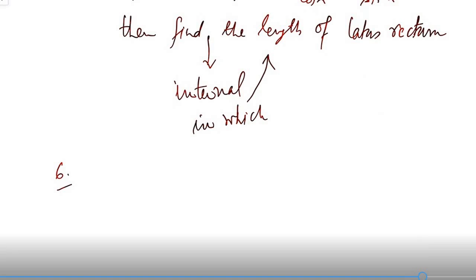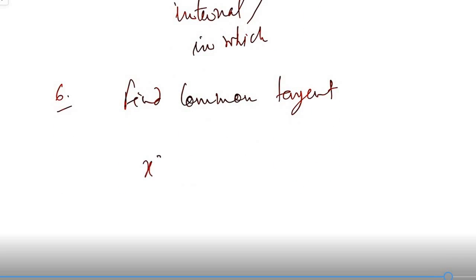And there is one more: find common tangent. Circle ka equation diya hua tha, x square plus y square is equal to 6ax, and one was y square is equal to 4ax.